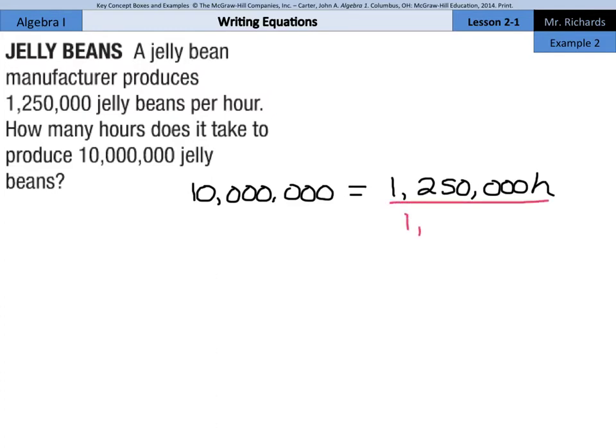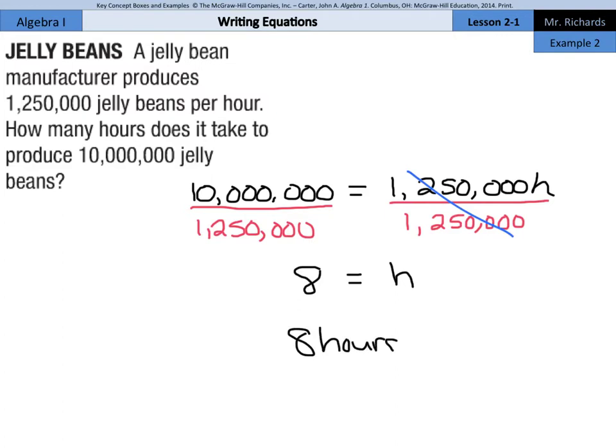And if we solve this equation, we'll find out how many hours it takes to make 10 million jelly beans. So, if we divide by 1,250,000 on both sides, cancels out on the right side, and H is going to equal 8. So, 8 hours is our solution to this question. Takes pretty much a full shift to get 10 million jelly beans.